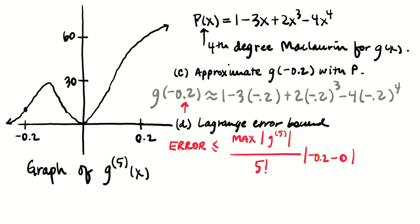The centering value is 0 since it's a Maclaurin polynomial. We use absolute value in case we're approximating to the left of the centering value, which we are, and we don't want the error term to be a negative number from an odd power.